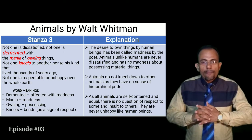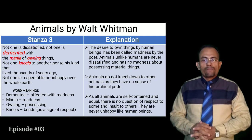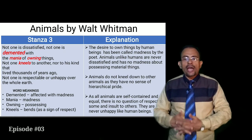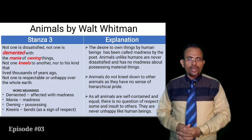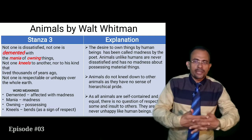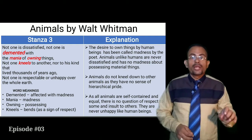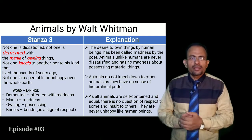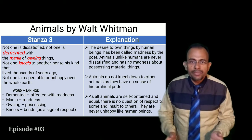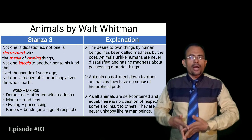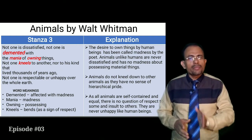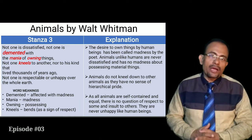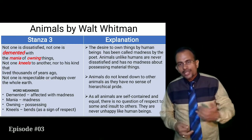Animals do not kneel down to other animals, as they have no sense of hierarchical pride. Human beings tend to flatter others, whereas animals do not have to flatter or kneel down to another animal. They have no realization of hierarchical order. As all animals are self-contained and equal, there is no question of respect to some and insult to others — they are never unhappy like human beings.